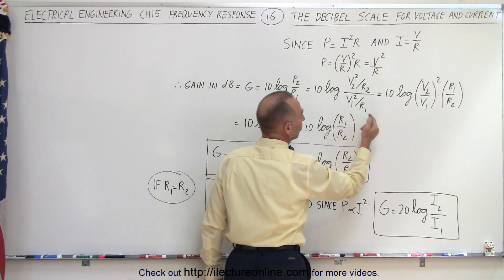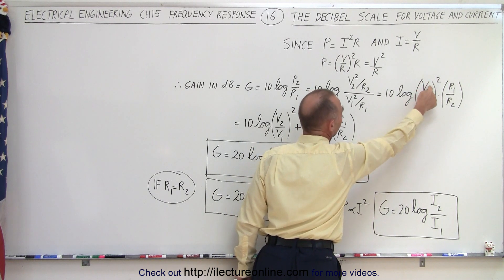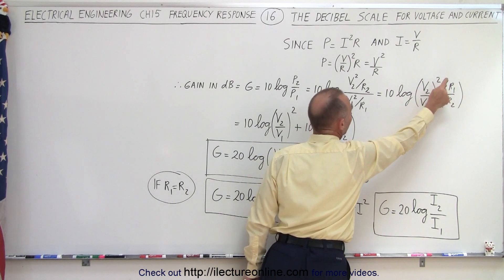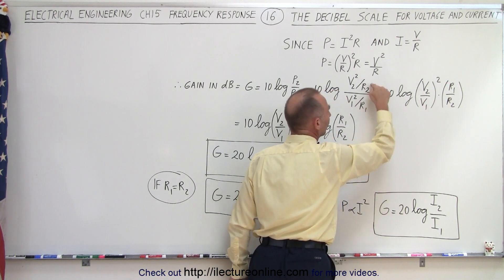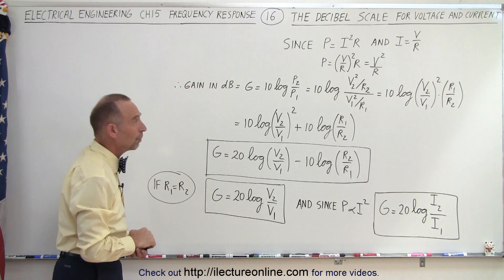And of course if we separate things a little bit, we can write as 10 times the log of the ratio of the voltage V2 over V1 squared times the ratio of the resistance R1 over R2. Notice since R is in the denominator, we have to switch that to turn into a multiplication.